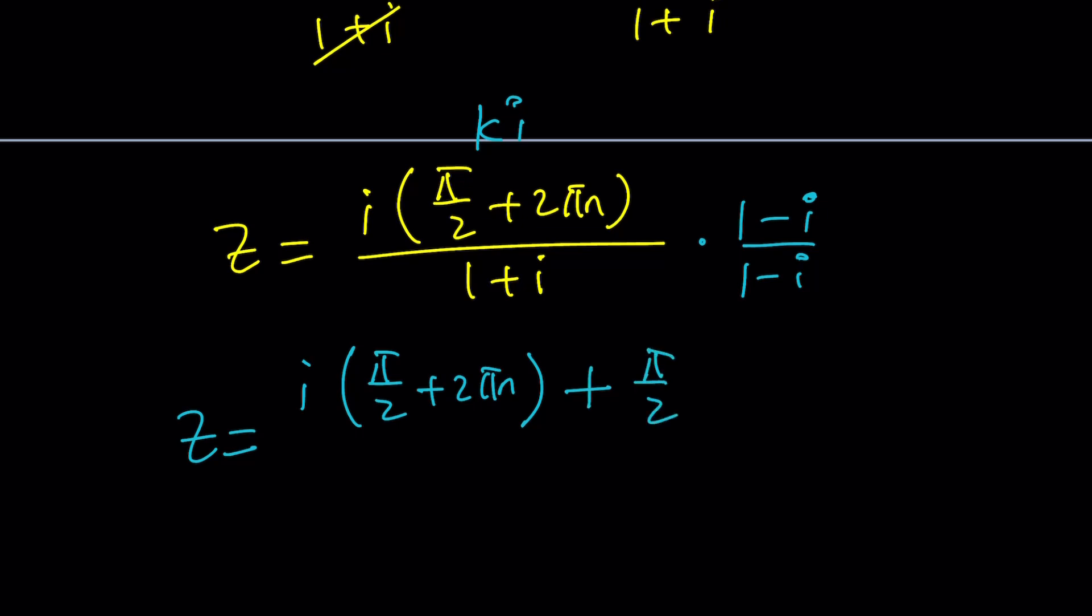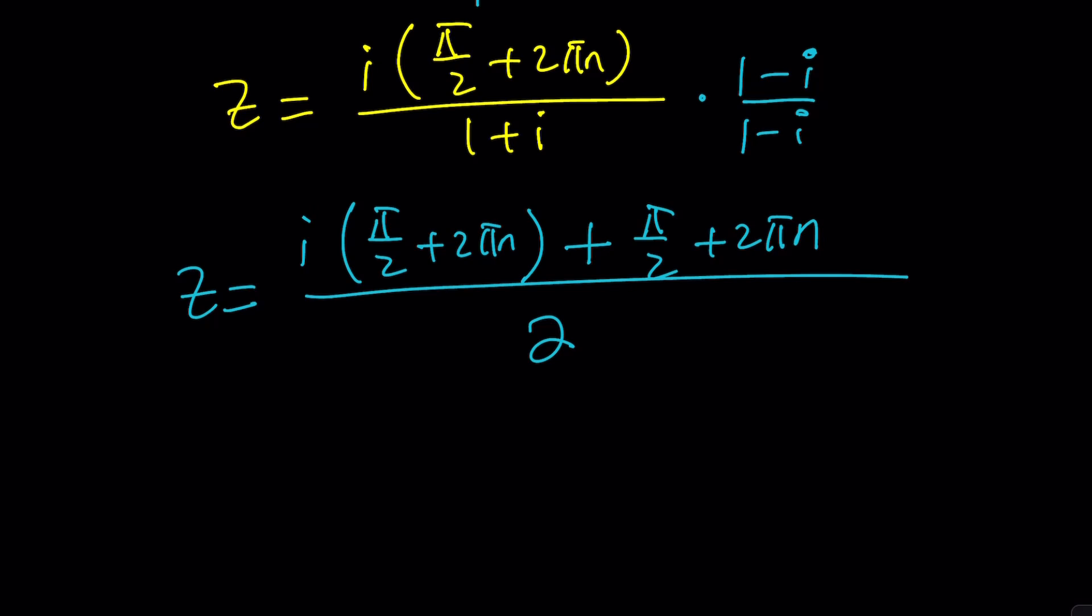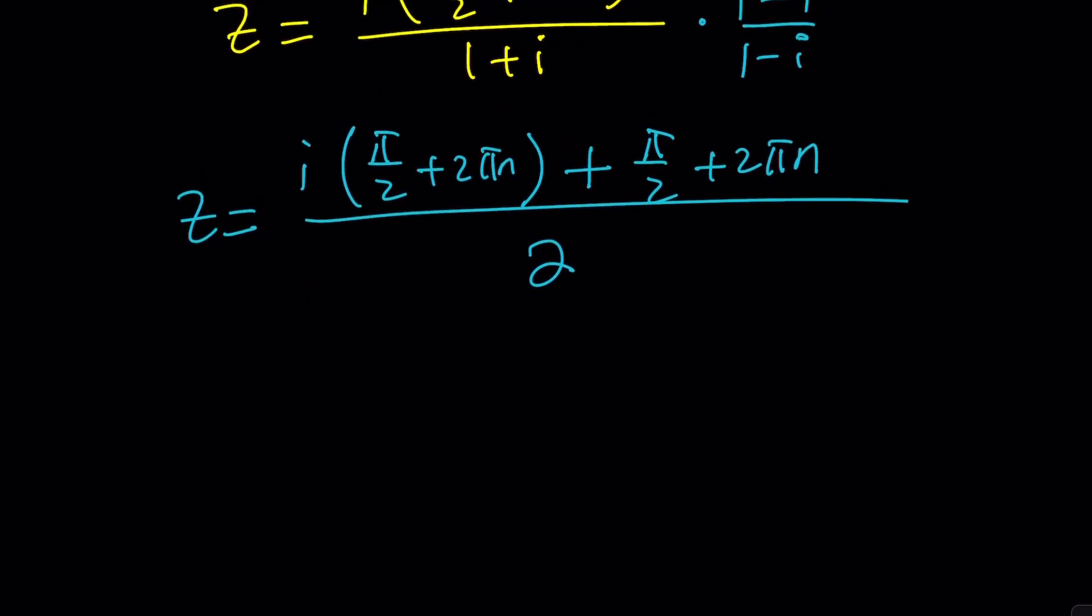But that's a minus i squared which is a positive one so you can totally ignore that and just add pi over 2 plus 2 pi n right with the stuff inside the parentheses all over 1 squared plus 1 squared which is 2 and then you can go ahead and divide everything by 2 and you should get the answer from here isn't that interesting.